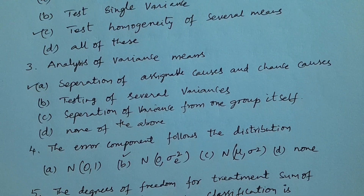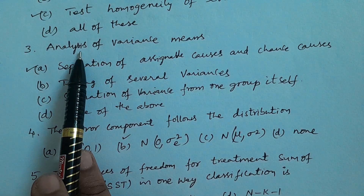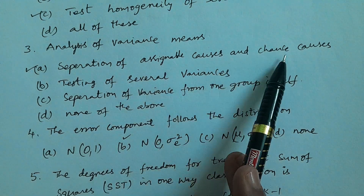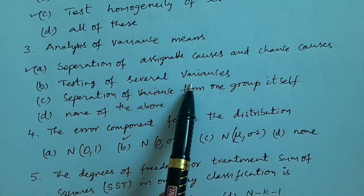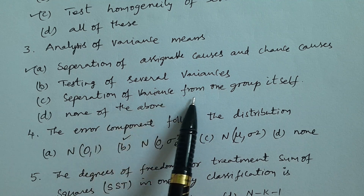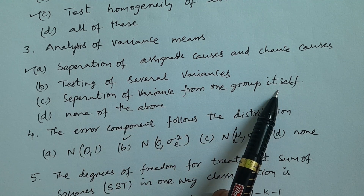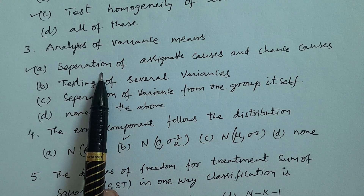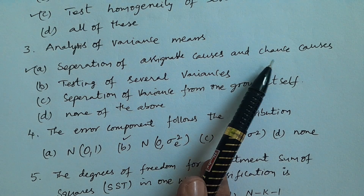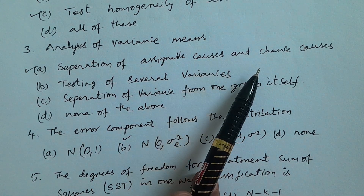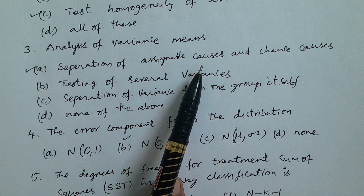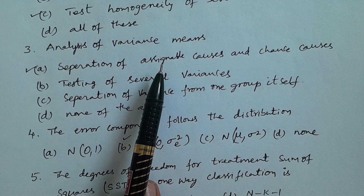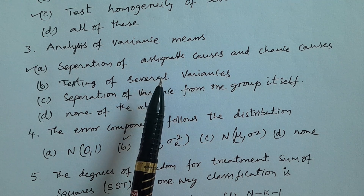Question number three: What is meant by Analysis of Variance? Options: A. Separation of Assignable Causes and Chance Causes, B. Testing of Several Variances, C. Separation of Variance from One Group Itself, D. None of These. The answer is A — Separation of Assignable Causes and Chance Causes. The separation of these two causes is the key definition of Analysis of Variance.